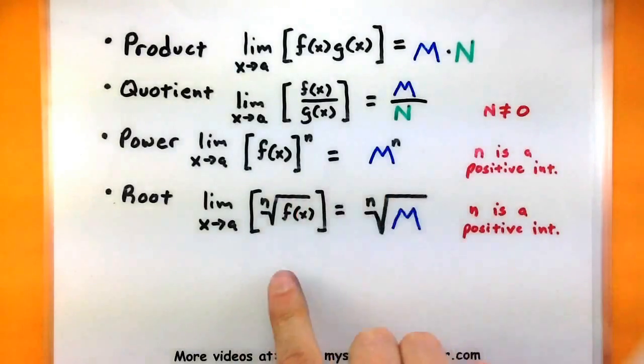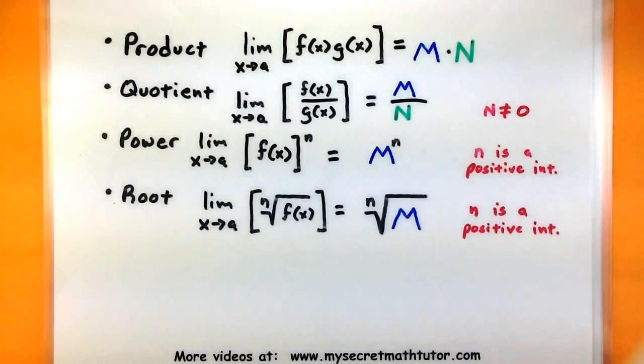For our power rule and our root rule, we want to make sure that n, the power or the index, is a positive integer. So, again, in all of these situations, it will allow us to break up a much larger problem and just look at the limit of the individual pieces.